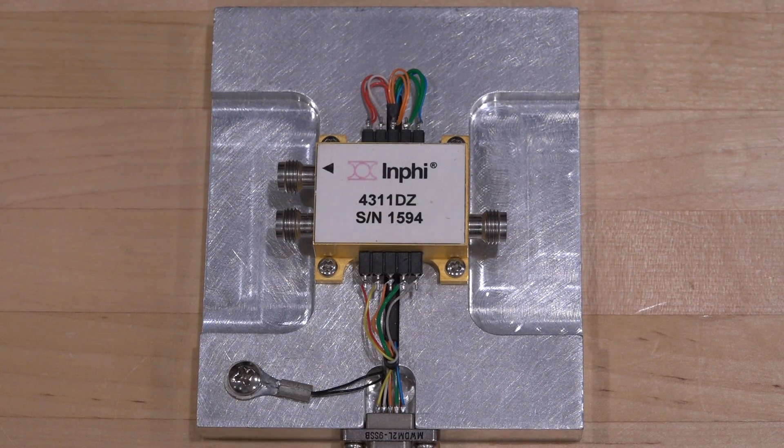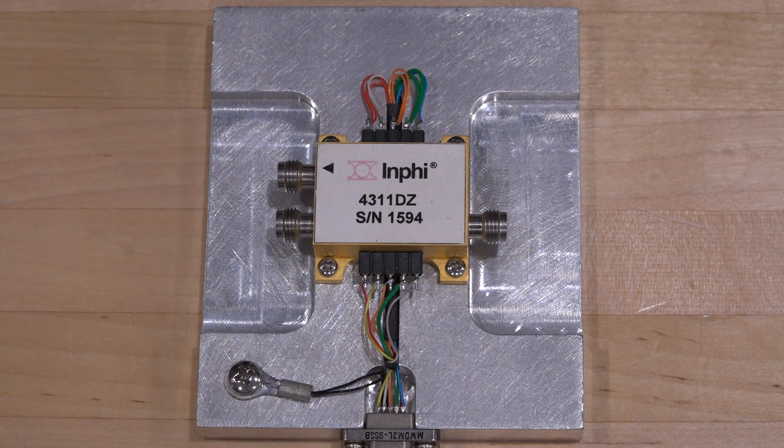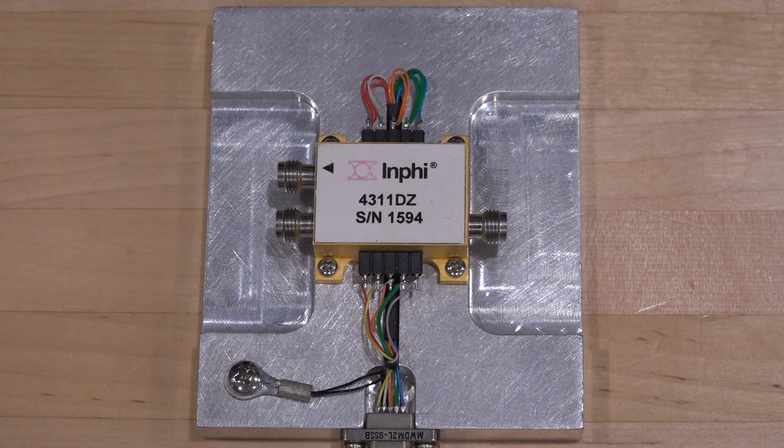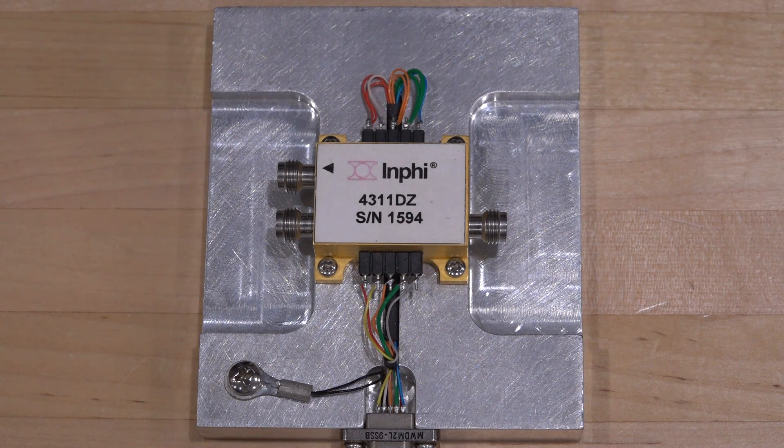Hi, welcome to the NoisePath. In this episode we're going to take a look at another ASIC custom assembly. This is an InFi Mach-Zehnder Modulator driver. It operates at 43 gigabit per second and it can put out up to 8 volts peak to peak.